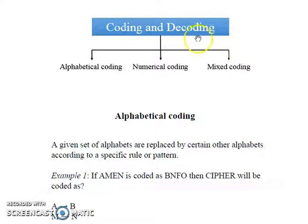In this section we are required to encode and decode words, numbers, and sentences by observing the pattern involved. It can be broadly classified into three parts: alphabetical coding, numerical coding, and mixed coding. Out of these three, alphabetical coding is the most frequently asked question. So let's begin with it.